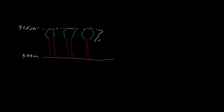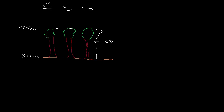We've gone out with a survey instrument and measured at the top of these trees — they should all be the same height — at 325 meters above sea level. So doing the quick math, the height of the tree, the difference between the ground and the top of the tree, is 25 meters. So if we have a sensor flying over each of these trees, the first sensor is trying to get the digital surface model, or the DSM.